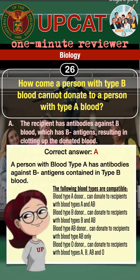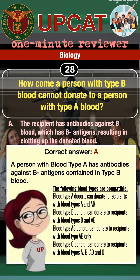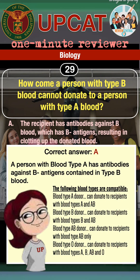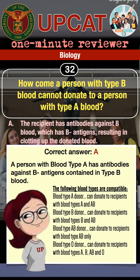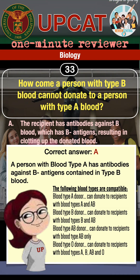The correct answer is A. A person with blood type A has antibodies against B antigens contained in type B blood. This will result in clotting of the donated blood.